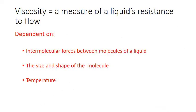There's one last factor that can influence viscosity, and that's temperature. If you want to get honey to flow more quickly, you can microwave it for a few seconds. As the temperature increases, the molecules move more rapidly, and their kinetic energies are better able to overcome the intermolecular forces that hold them together. As a result, they can move more easily relative to each other, and the viscosity of the liquid decreases.